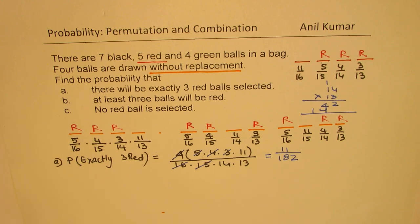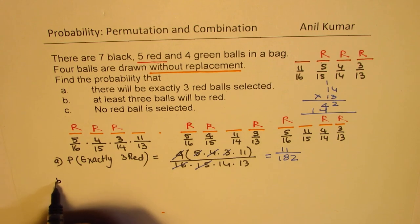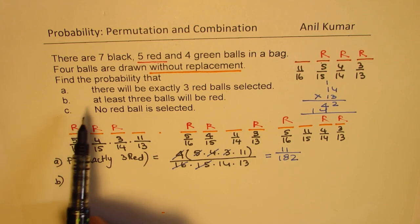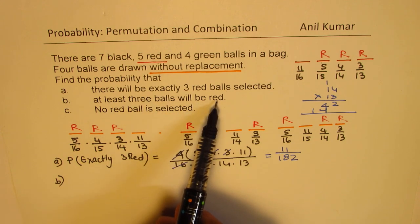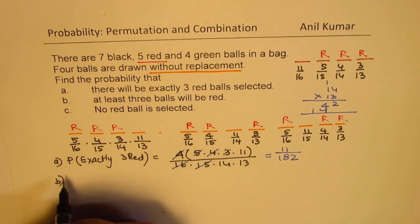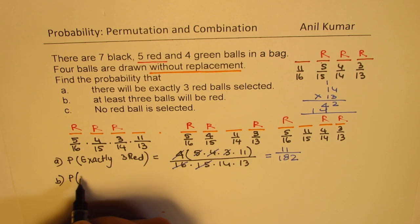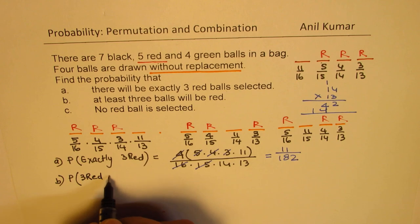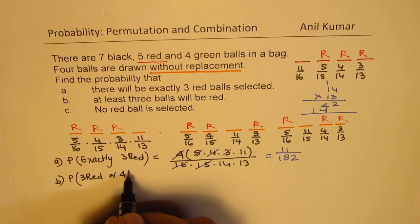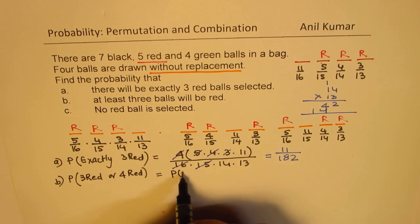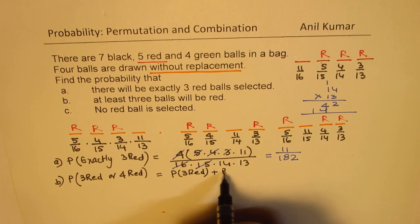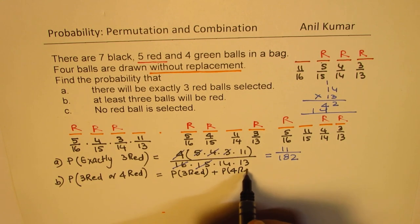Now Part B: at least 3 red balls will be selected. When we say at least, that means we get 3 red or we get 4 red. So the probability for at least 3 red is the probability of 3 red plus the probability of 4 red.